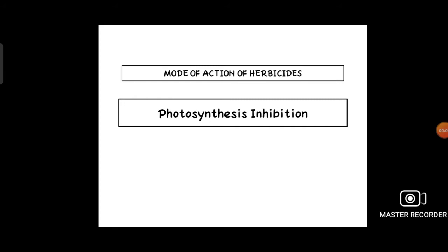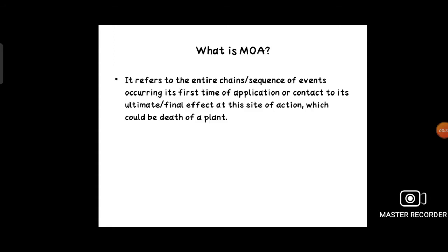This is a most important chapter for ICAR-JRF agronomy. Every year you will get one or two questions from this chapter, whether in matching form or direct question. Mode of action refers to the entire chain or sequence of events occurring from its first time of application or contact to its ultimate or final effect at the site of action, which could be death of a plant.